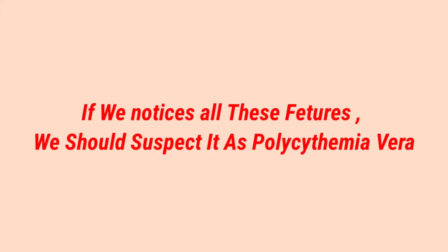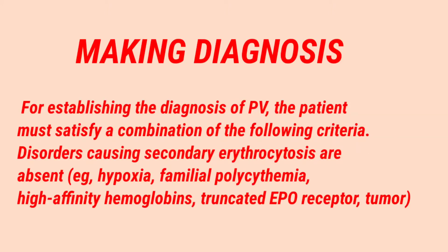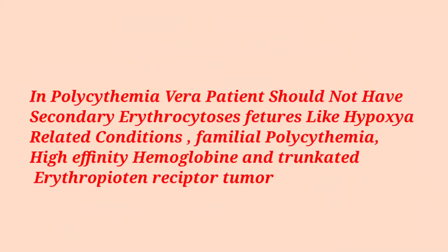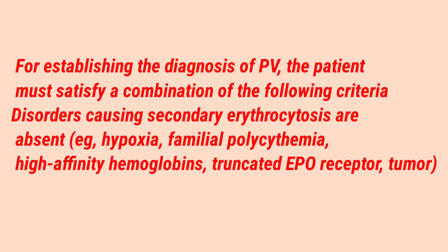We have to suspect that the patient is having polycythemia when there is increasing red cell mass or increasing hemoglobin and hematocrit. The patient should not have secondary erythrocytosis features such as hypoxia-related conditions, familial polycythemia, high affinity hemoglobin, or truncated erythropoietin receptor — these must be excluded to make the diagnosis.